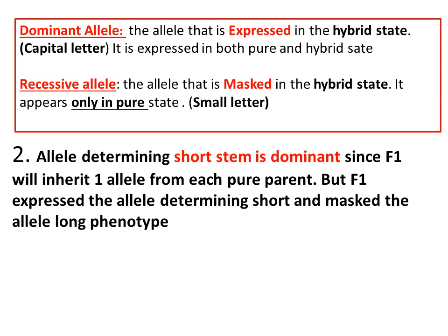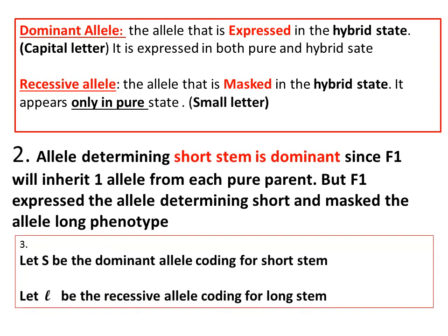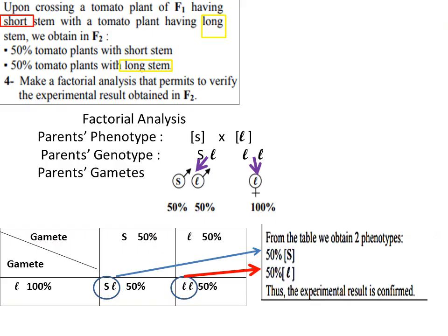Question 3 asks to designate symbols. You can choose any symbol — make sure the dominant is written uppercase and the recessive is written lowercase. I'll use capital S for short and small l for long. So: let capital S be the dominant allele coding for short stem, and let small l be the recessive allele coding for long stem.